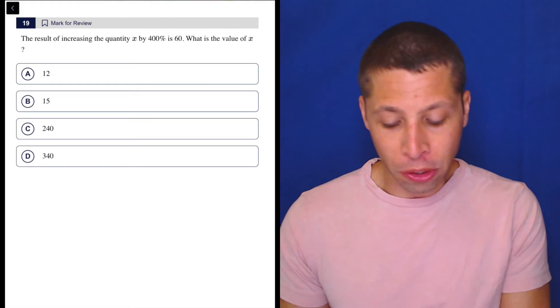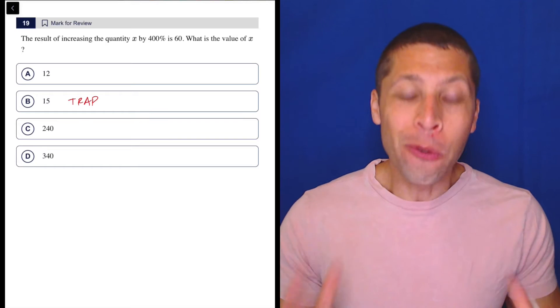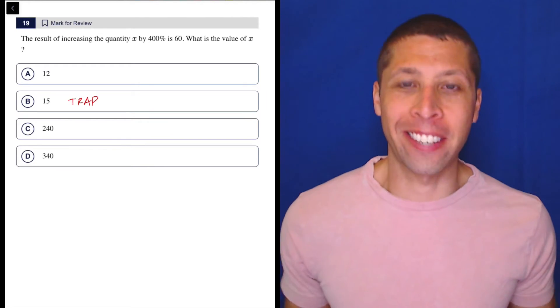If you got this wrong, you almost certainly picked choice B. And no, this is totally preventable. You should have seen this coming, okay?